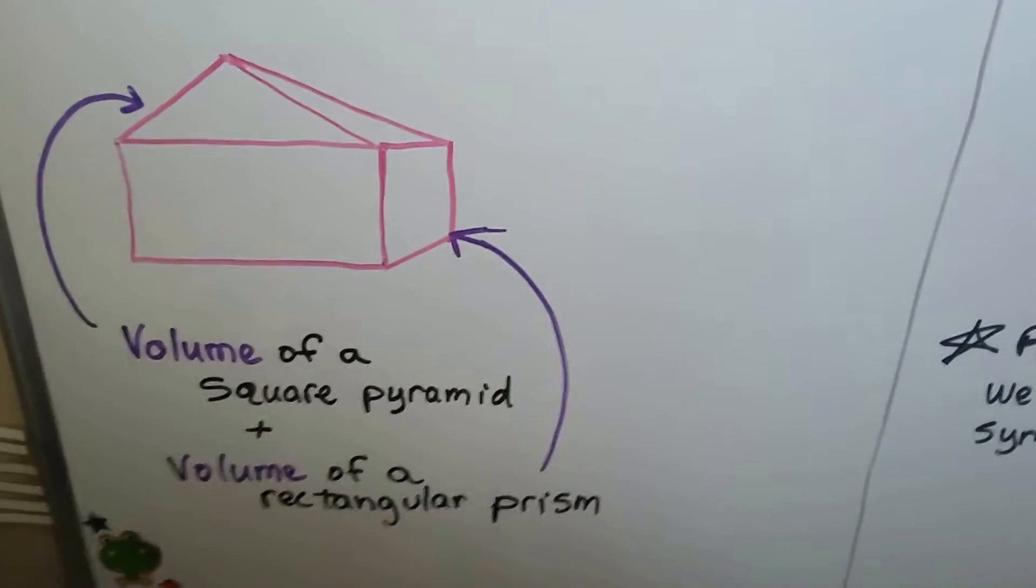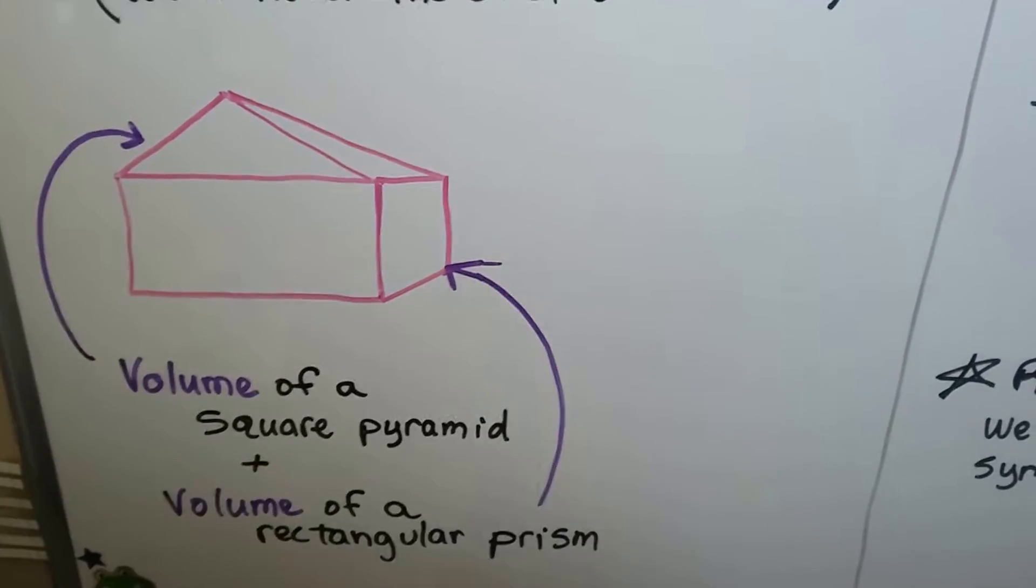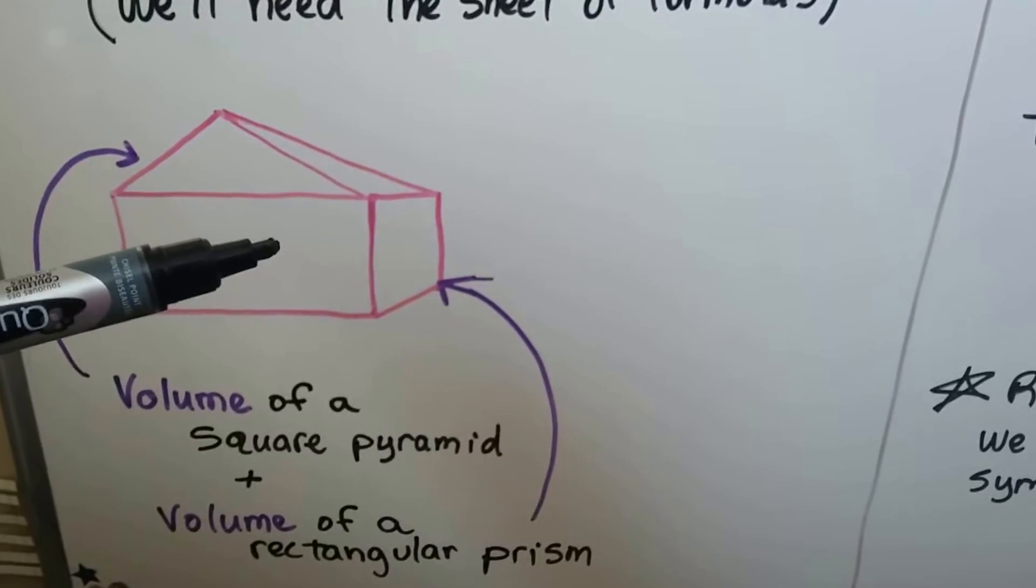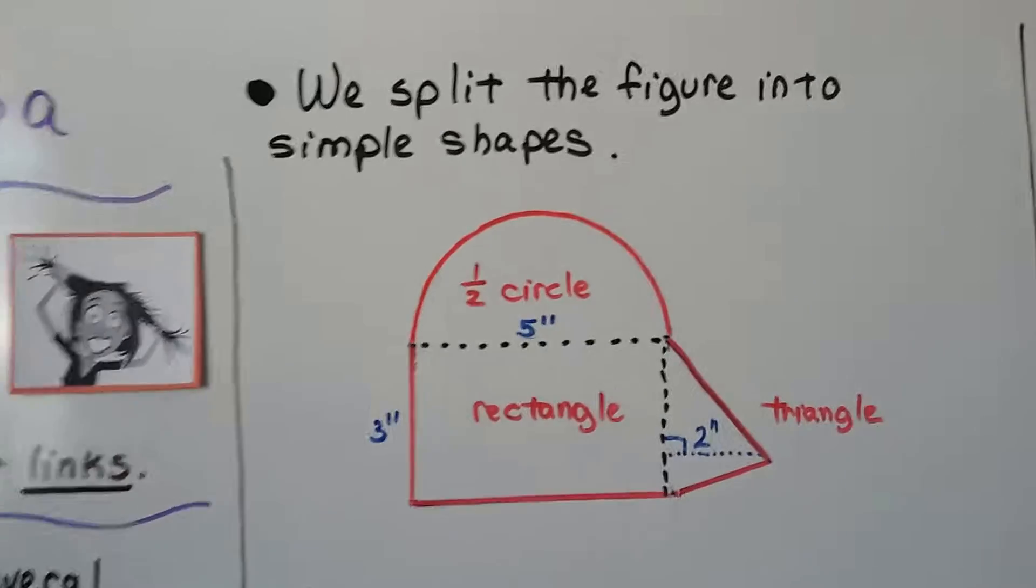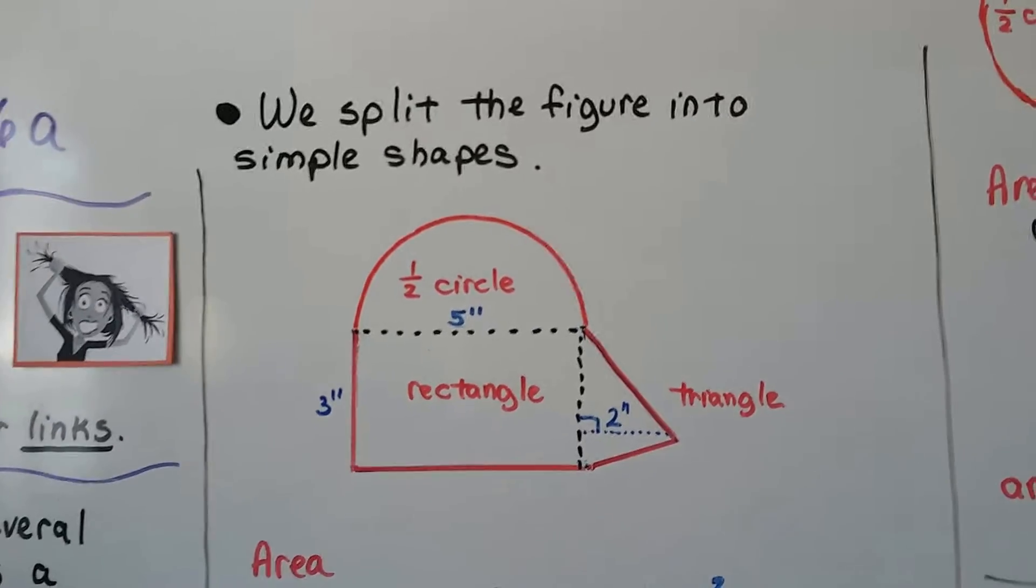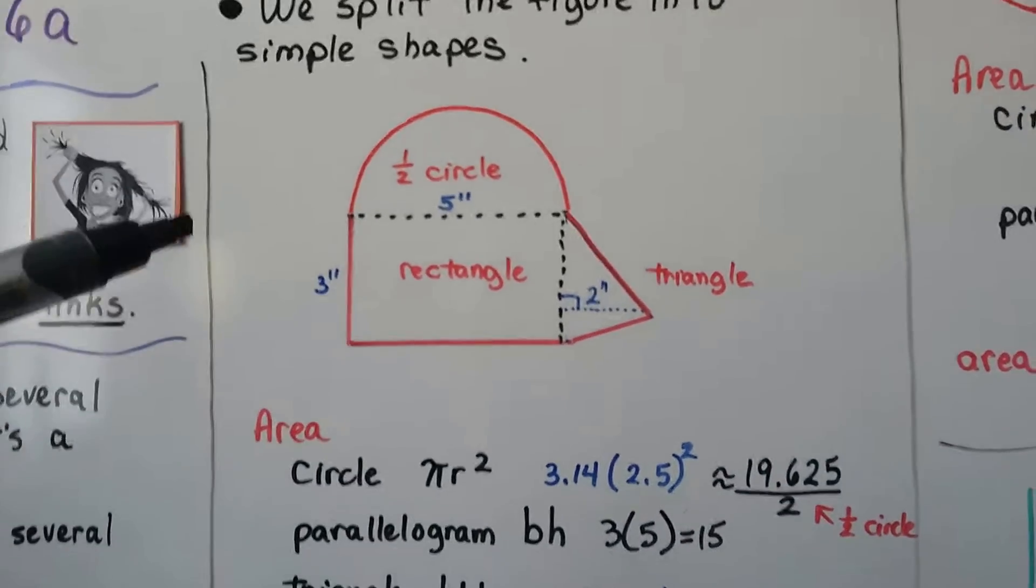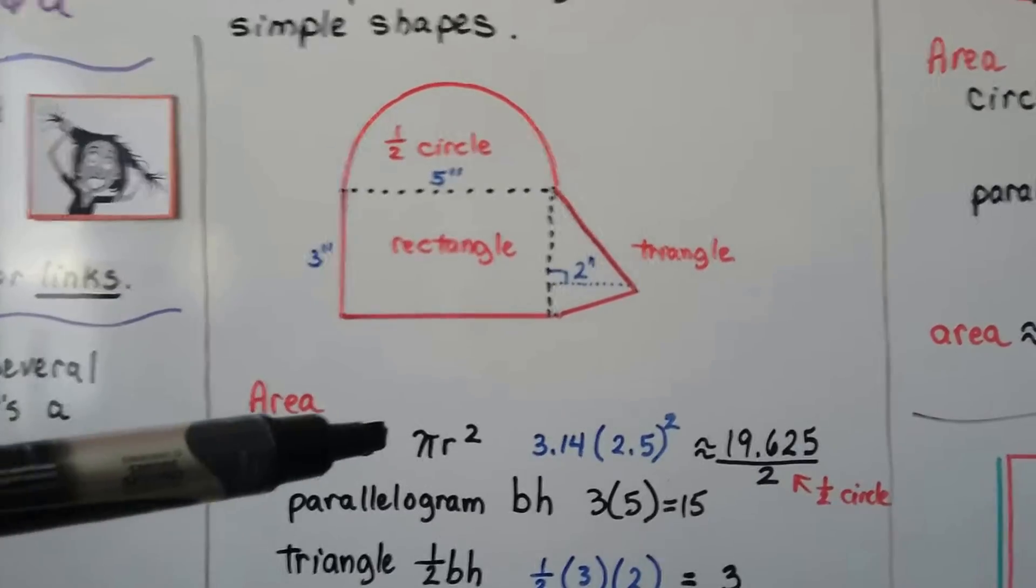For this composite figure, we have a square pyramid and a rectangular prism. We find the volume for the square pyramid, we find the volume for the rectangular prism, and we add them together to get the entire thing. We split the figure into simple shapes. For something like this, we see a half circle, a rectangle, and a triangle. To find the area, we would use the formula for the area of a circle, pi r squared.